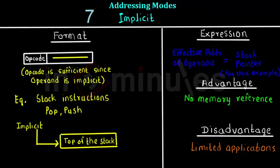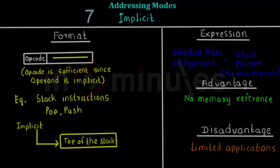That's all about the different addressing modes present inside the processor. These addressing modes can vary from organization to organization, and different processors have different addressing modes. I hope you've got a general idea of which addressing modes are present and what their significance is inside CPU organization. Stay tuned for more videos, thank you.